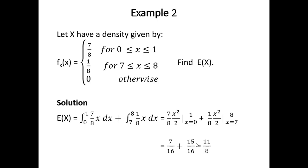Now what if we have a piecewise defined function? Example two. Let's say X has a density given by f(x) = 7/8 for x between 0 and 1, and 1/8 for x between 7 and 8. A little unusual, but this is a PDF. We want to find E(x). The idea is simply to break up our integral into two integrals. We integrate over this region, and the other over this region, and we have to remember to multiply by x.